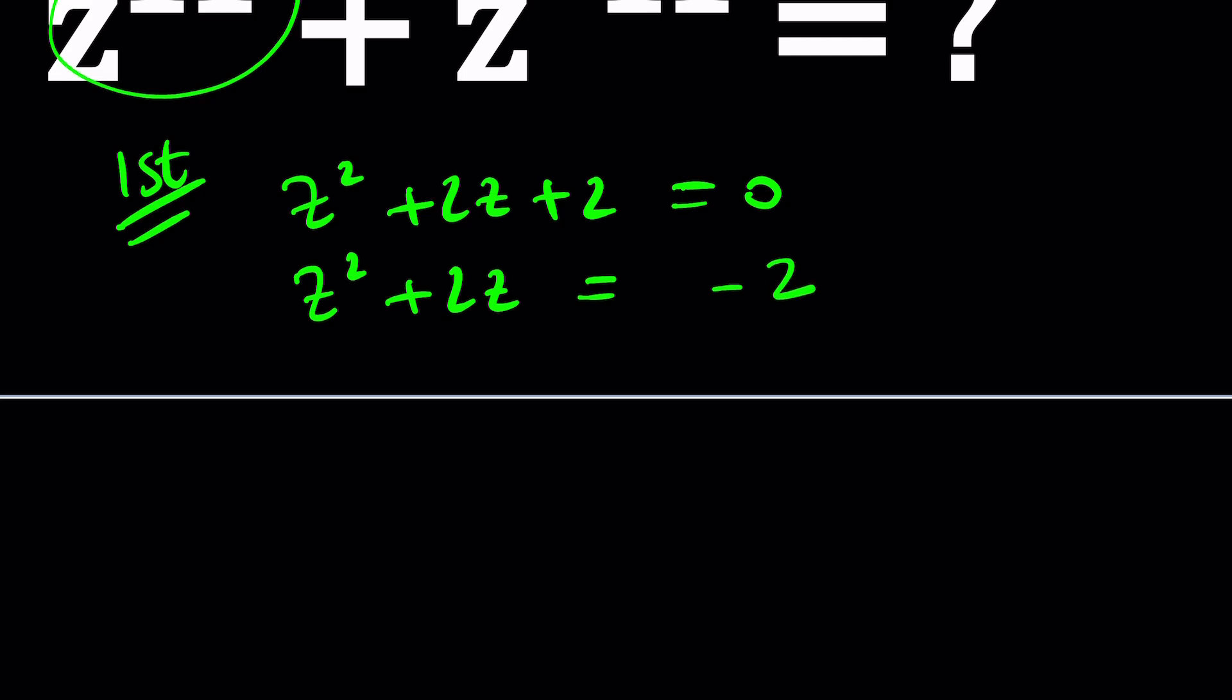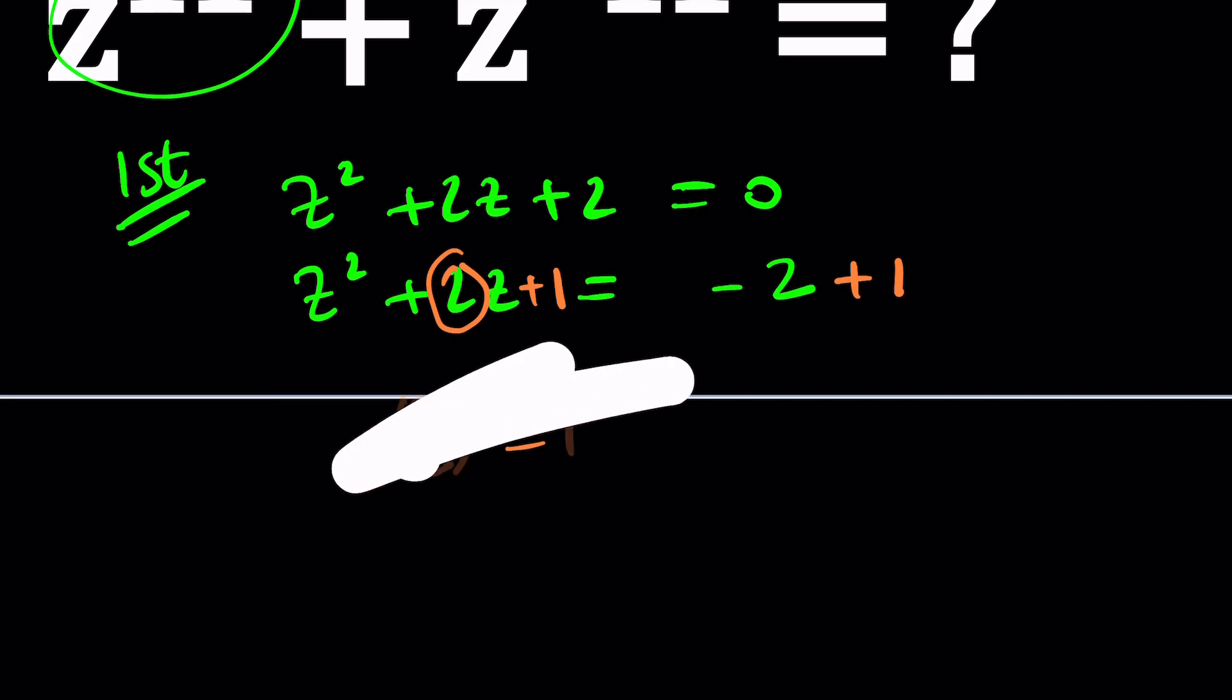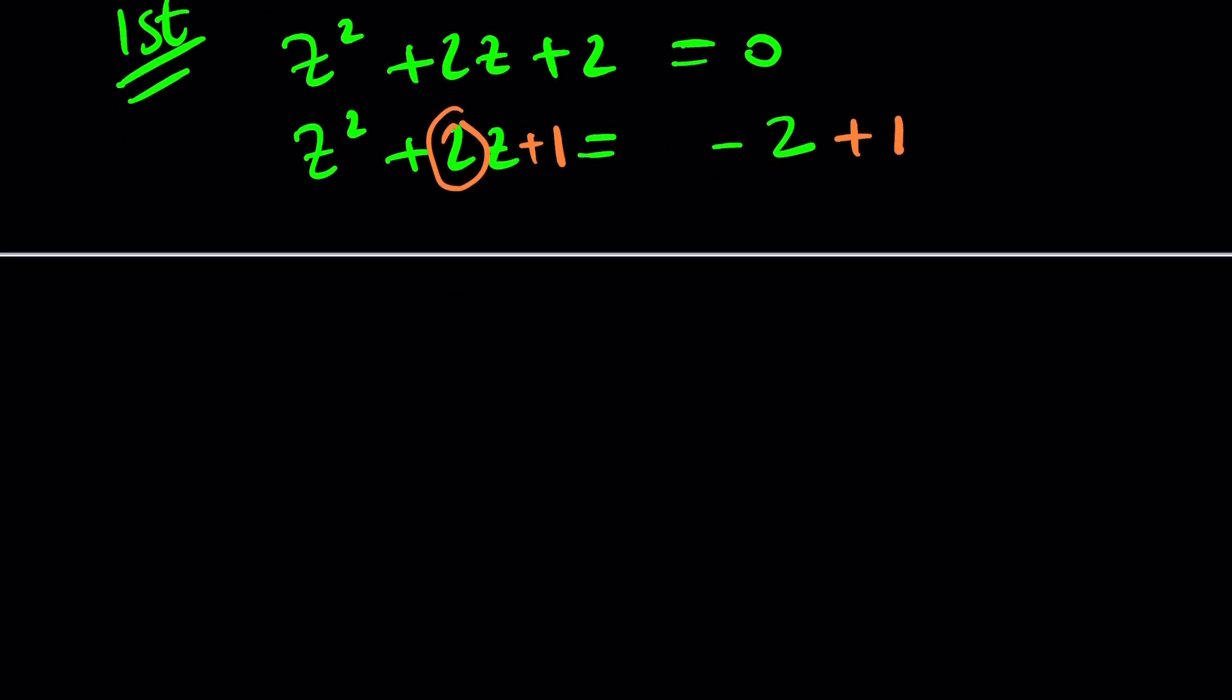First, subtract 2 from both sides to isolate the constant, and then add 1 to both sides. And the reason why we're adding 1 is that'll make the left-hand side a perfect square. And the reason behind that is if you take the coefficient of z, which is 2, and cut that in half and square, you're going to get 1. So 1 is the magic number here. If you add it to both sides, the left-hand side is going to be a perfect square. So that gives us z plus 1 quantity squared, and on the right-hand side we have negative 1.